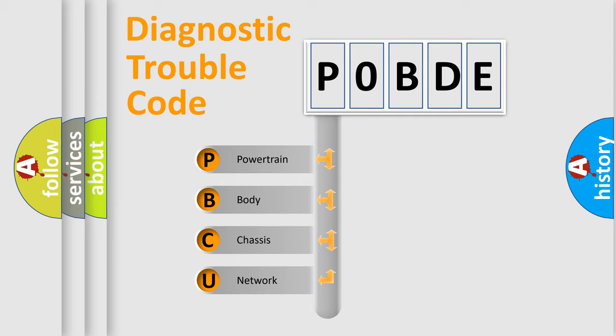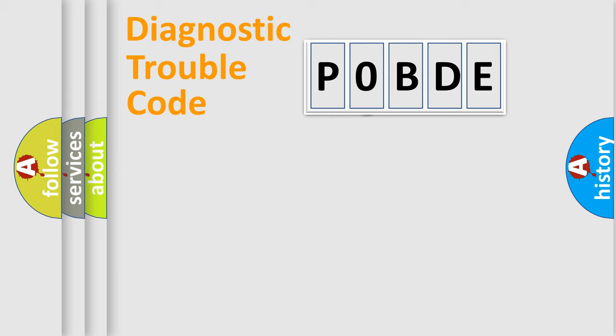We divide the electrical system of automobiles into four basic units: Powertrain, Body, Chassis, and Network. This distribution is defined in the first character of the code.